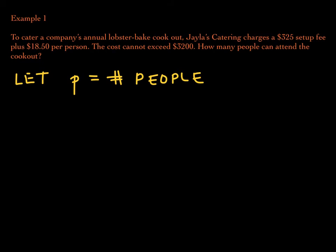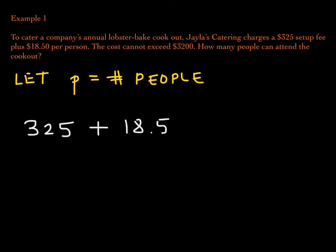No matter how many people go to the cookout, the setup fee is $325 regardless of how many people are there. Plus — you can even see the word plus here — $18.50 per person. For every person at the cookout, it's $18.50 times P. The cost cannot exceed means you must not spend more than $3,200 — that's the most you can spend. So the correct symbol here would be less than or equal to $3,200.